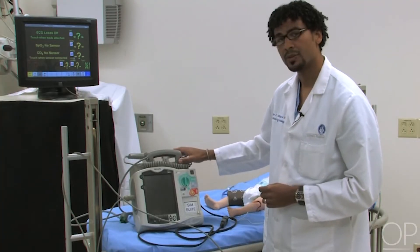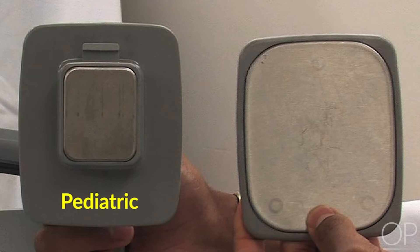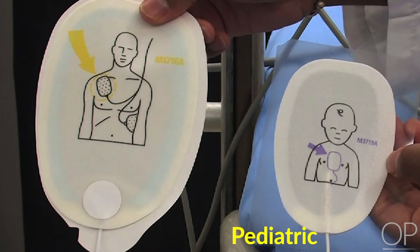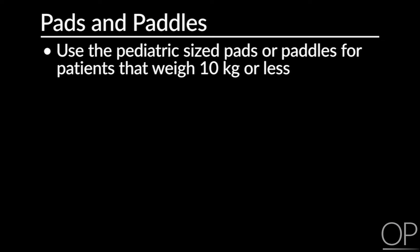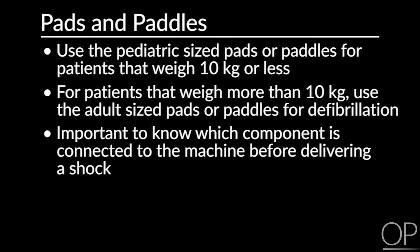Starting with the piece that interacts with the patient — the paddles or pads. Both come in two sizes: a pediatric-sized paddle and an adult paddle. The cut-off is weight. We use pediatric-sized pads and paddles for patients that weigh 10 kilograms and less. Any patient that weighs more than 10 kilograms, we should try to use an adult-sized pad. It's very important to know exactly which one of the two is connected to your machine before you deliver a shock.